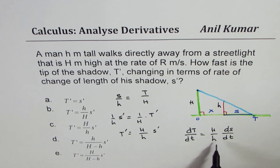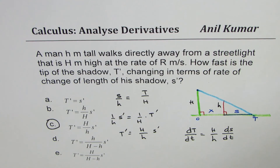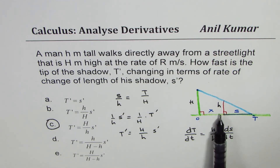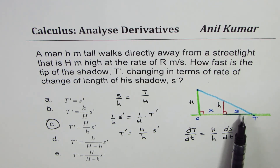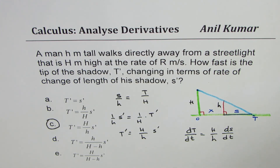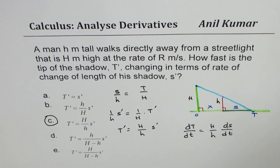So if you have a question with part A asking for the rate of change of shadow length and part B asking for the rate of change of the tip, you can multiply by H and divide by h applied to the shadow rate to get the tip rate. I hope that helps you understand the different scenarios involved in such cases. Feel free to post your suggestions, and share my videos with your friends. Thank you and all the best.